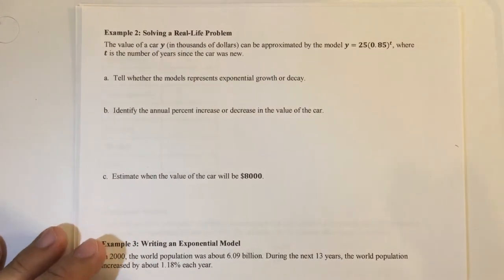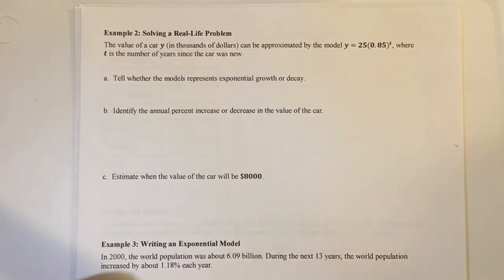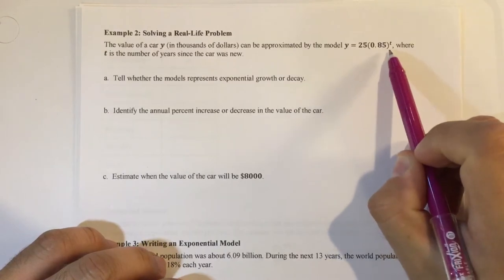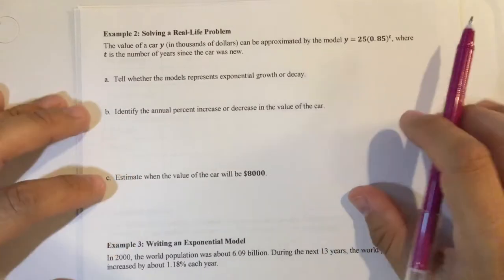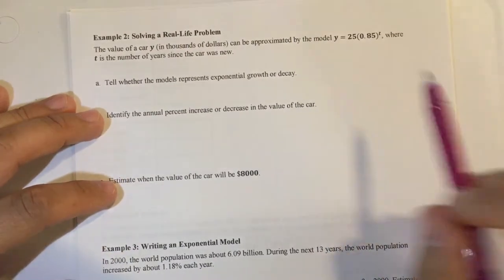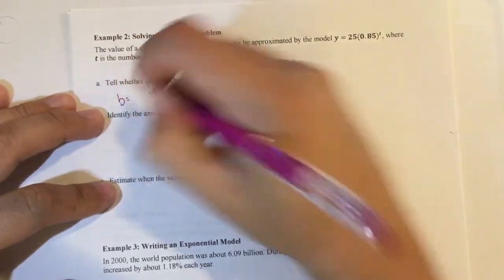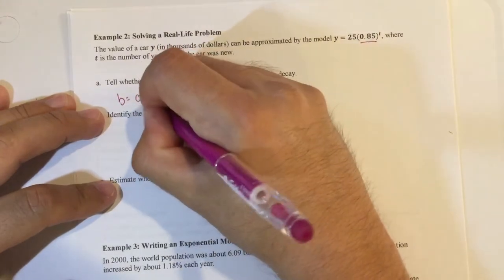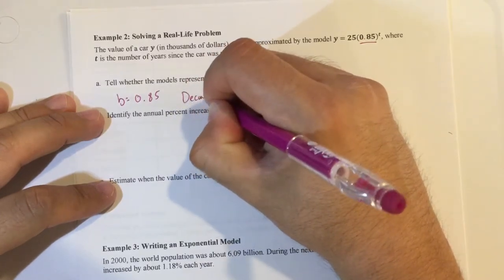So first example says solving a real life problem. The value of a car y in thousands of dollars can be approximated by the model right here, where t is the number of years since the car was new. So y equals 25 parentheses 0.85 raised to the t power. And just remember that 25 is in thousands. So tell whether the model represents exponential growth or decay. In order to do this, we're going to figure out what the b value is. So in this case, the b value is right here, which is 0.85. That number falls between 0 and 1, which means it is decay. So it's exponential decay.